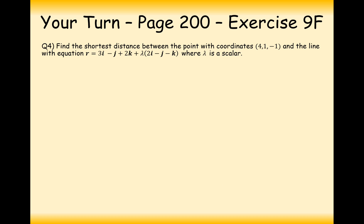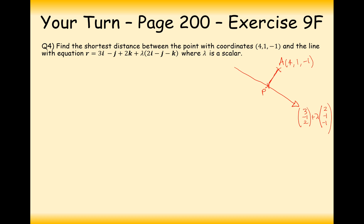Now it's your turn — pause the video and give this question a go. Let's get started by drawing a nice diagram. We have a line and a point. The point A is 4, 1, minus 1. The equation of the line is 3, minus 1, 2, plus lambda lots of 2, minus 1, minus 1. We label this as coordinate A and this will be coordinate P. P is somewhere along this line for some value of lambda, so its coordinate is 3 plus 2λ, minus 1 minus λ, and 2 minus λ.